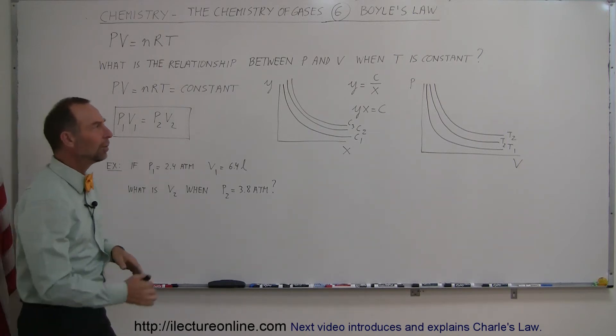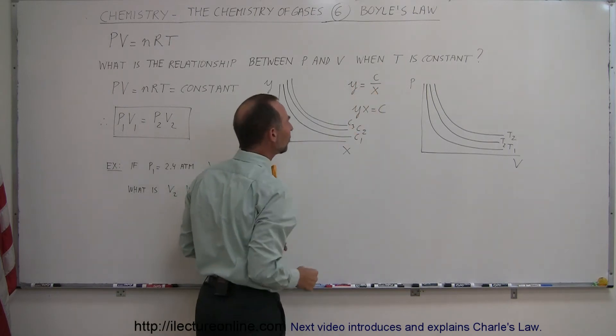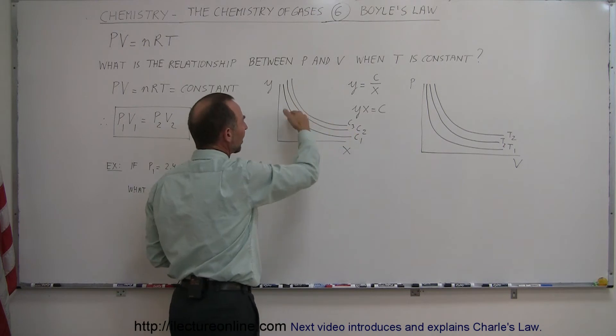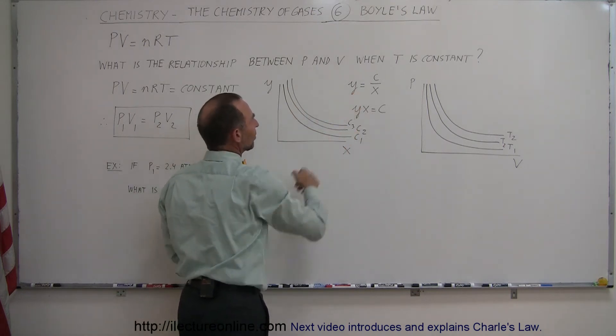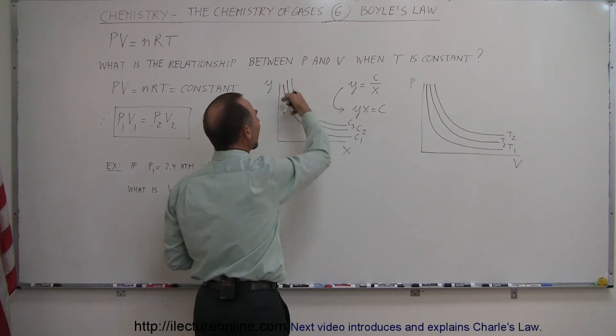So if we go to some basic algebra, where we take the equation Y equals a constant divided by X, and we graph that, we get this kind of graph. And if we then write this equation like this instead, so this is the very same equation, that Y times X equals a constant.